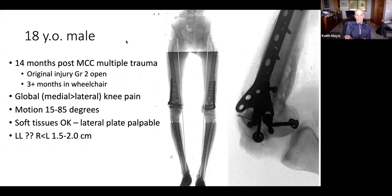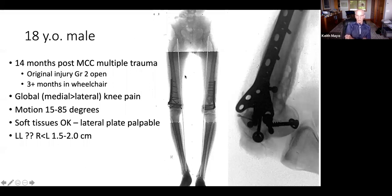A key challenge: this is a non-weight-bearing alignment film. Keith invites input on solving the problem of limb axis assessment in a patient with a significant knee flexion contracture — a situation where standard alignment films are inherently limited.